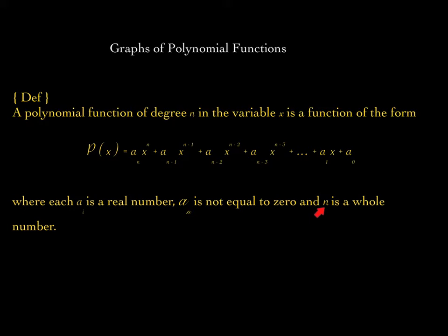So n must be 0, 1, 2, 3, 4, 5, 6, 7, 8, and so forth. These n values are not allowed to be like 1 half or 1 third — no fractional exponents, no negative exponents. They must be whole number exponents.